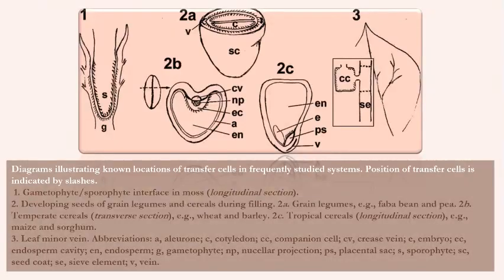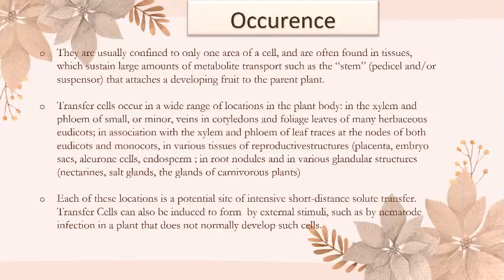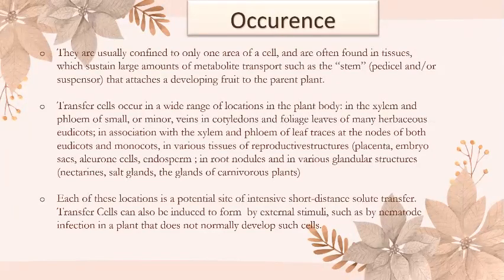Diagrams illustrate known locations of transfer cells in frequently studied systems. The position of transfer cells is indicated by slashes. They are usually confined to only one area of a cell and are often found in tissues, occurring in a wide range of locations in the plant body. Each of these locations is a potential site of intensive short-distance solute transfer.